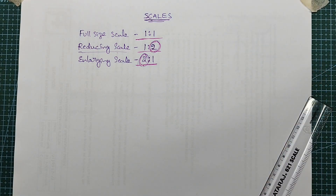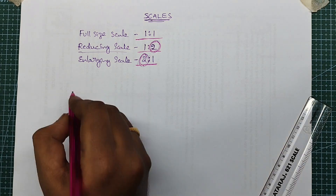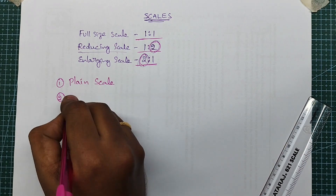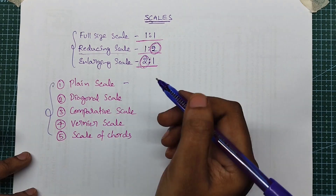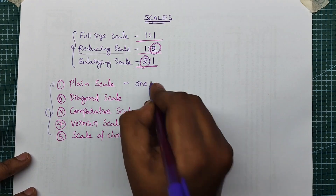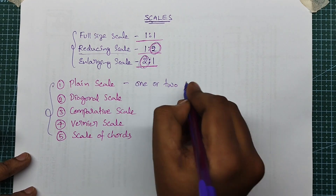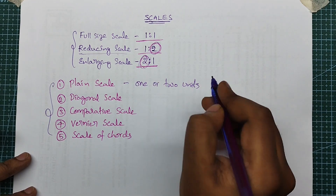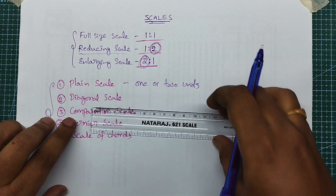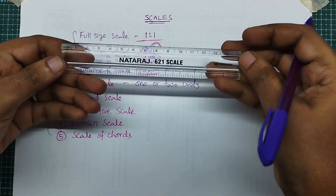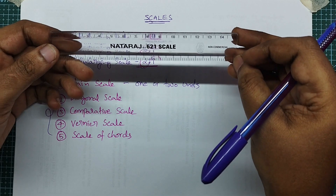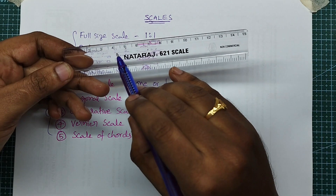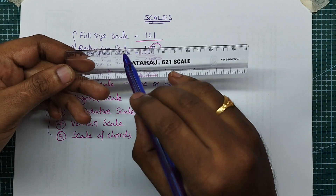The five types of scales are: Plane Scale, Diagonal Scale, Comparative Scale, Vernier Scale, and Scale of Chords. Plane Scale is used to read 1 or 2 units using a normal scale. We have 2 units: centimeters and millimeters.